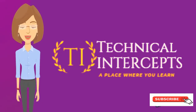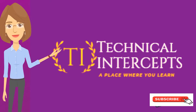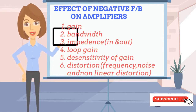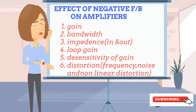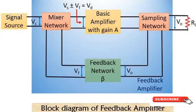Hello and welcome to my YouTube channel Technical Intercepts. In this video we will see how feedback changes the parameters of a basic amplifier — like gain, bandwidth, input and output impedances — and whether these changes are good or not. Let's see about it. Before going into that, let's have a quick look at the block diagram of a feedback amplifier.